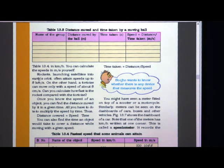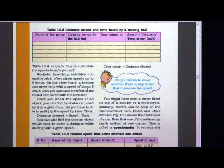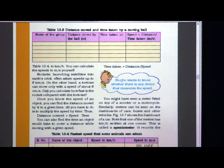In a minute you cannot go 8 kilometers, but these rockets can go 8 kilometers in a second. On the other hand, a tortoise can move only with a speed of about 8 centimeters per second. So 8 centimeters — that is about half your ruler scale — is very slow. In a second the tortoise goes only 8 centimeters.